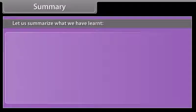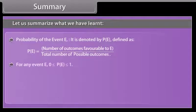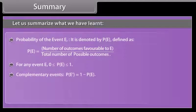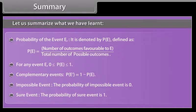Summary: Probability of event E is defined as P(E) = number of outcomes favourable to E divided by total number of possible outcomes. For any event E, 0 ≤ P(E) ≤ 1. Complementary events: P(not E) = 1 − P(E). Impossible event: P(impossible event) = 0. Sure event: P(sure event) = 1.